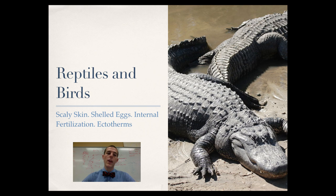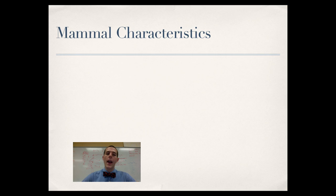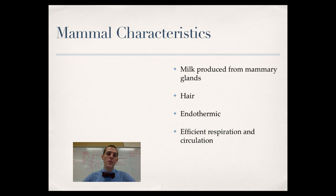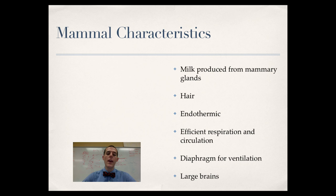In birds, there are some additional modifications: scales have been modified into feathers, and the bones have openings in them so they are light and able to fly. Moving up to mammals, special characteristics include milk produced from mammary glands — giving the name mammal — hair, endothermy meaning they produce and regulate their body temperature internally, efficient respiration and circulation, a diaphragm for ventilation separating the abdominal and thoracic cavities, and large brains capable of planning and complex thought.